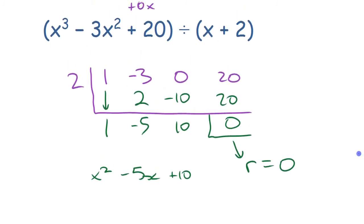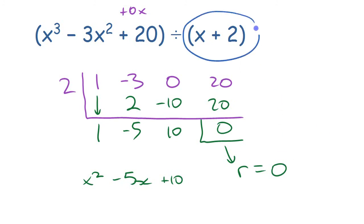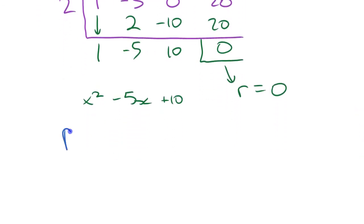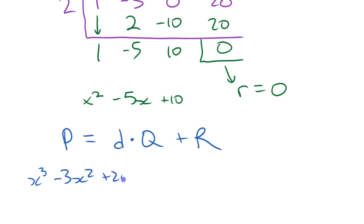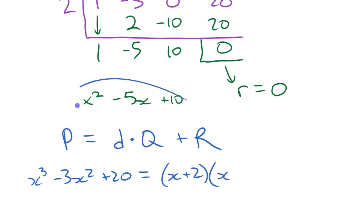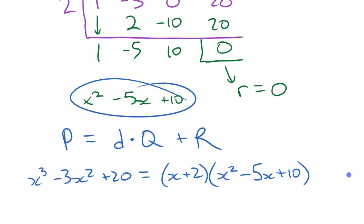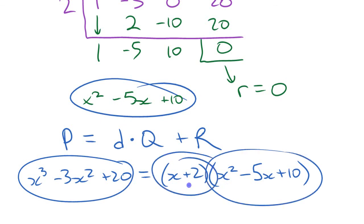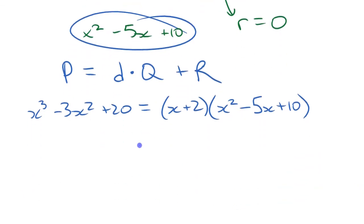A remainder of zero means that x plus 2 divides nicely into this polynomial with no remainder — it means x plus 2 is a factor of this polynomial. We can write a check statement: the original polynomial equals the divisor times the quotient plus the remainder. So x cubed minus 3x squared plus 20 equals (x plus 2) times (x squared minus 5x plus 10) plus zero.